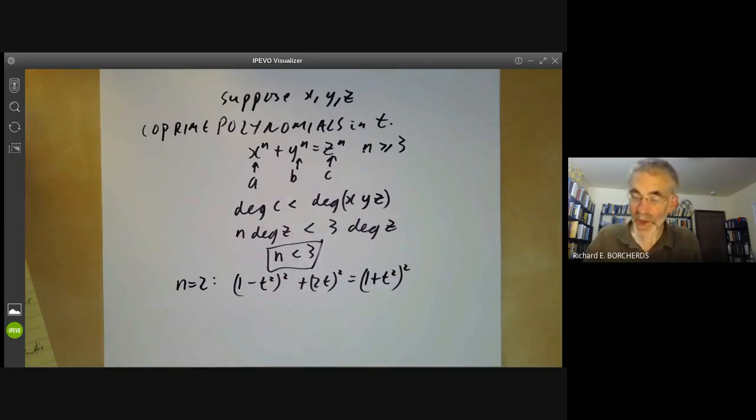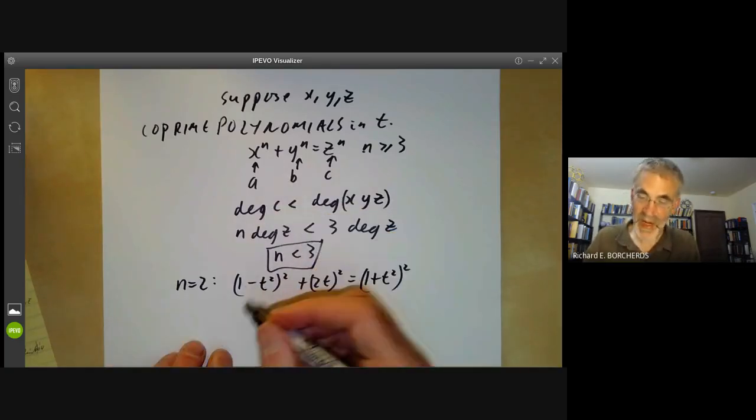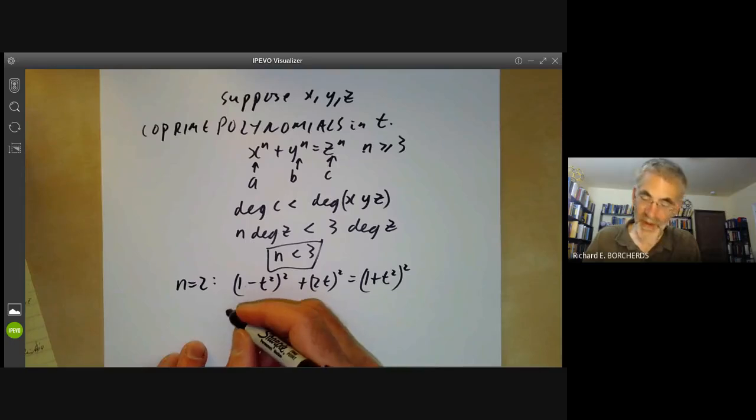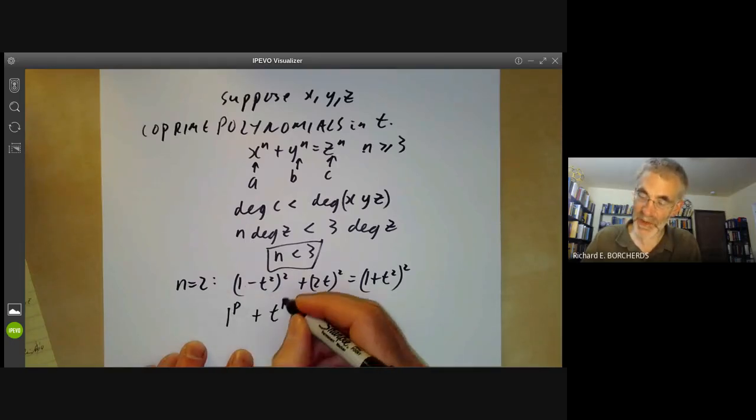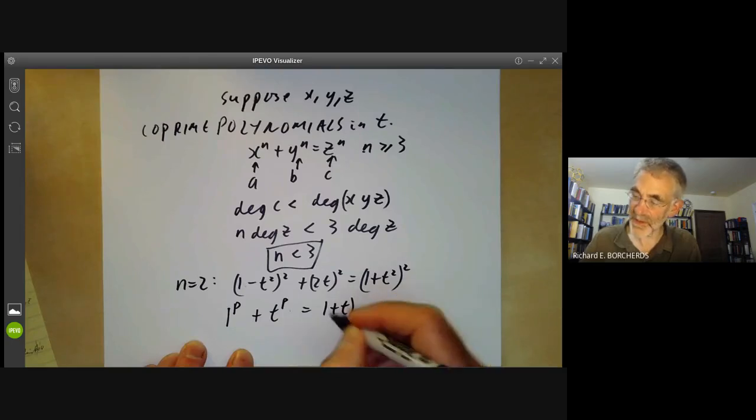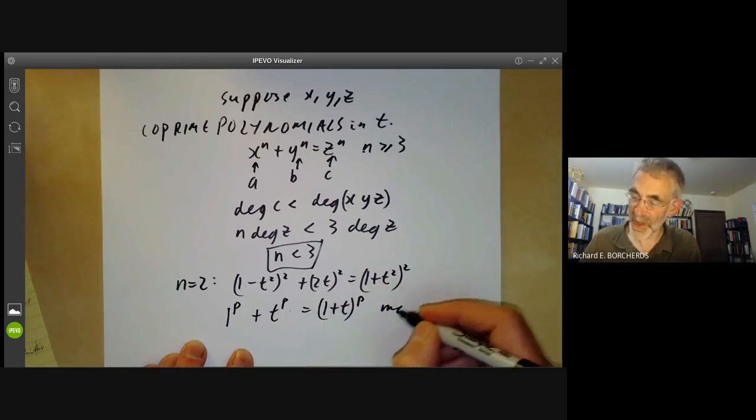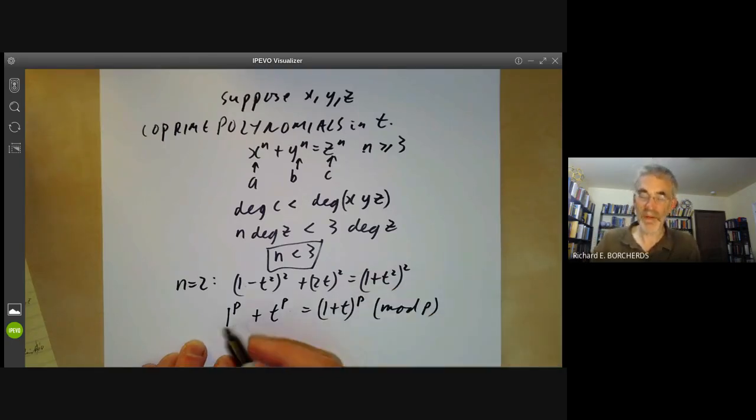By the way, if you're working over a field of characteristic p, then you can get formulas like 1 to the p plus T to the p equals (1 plus T) to the p. So this is working mod p. So you need to be a little bit more careful if you're not working over the complex numbers.